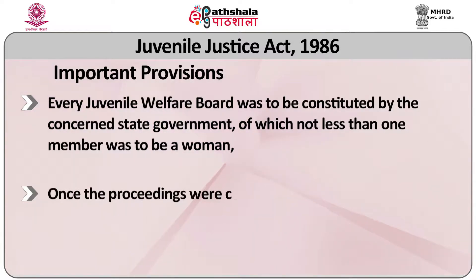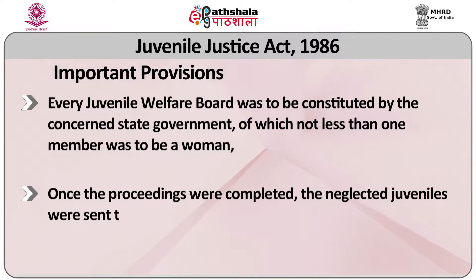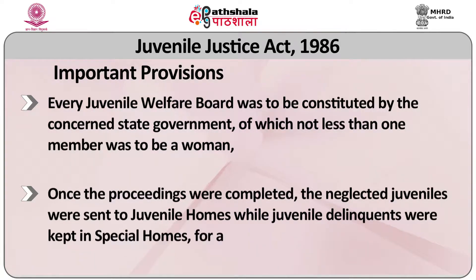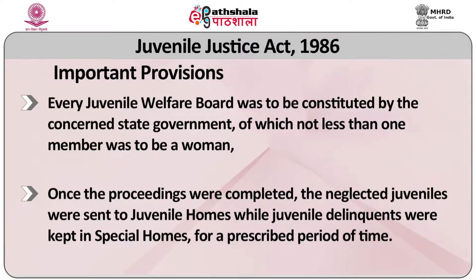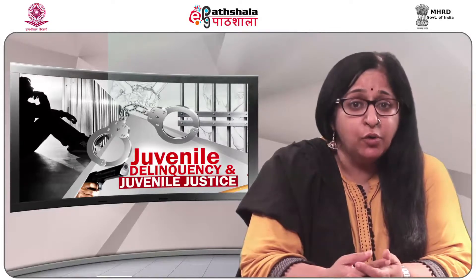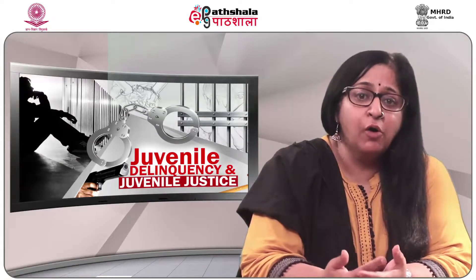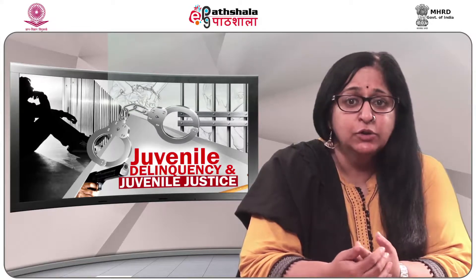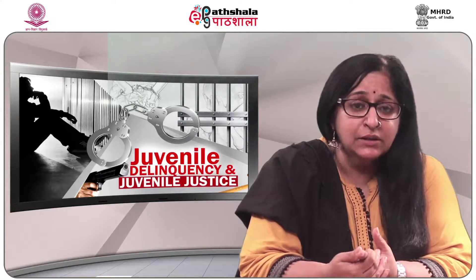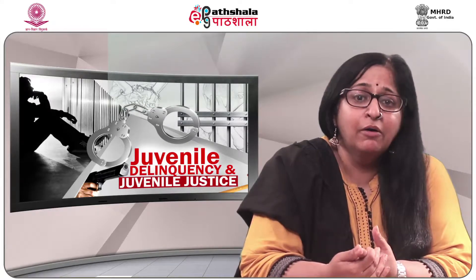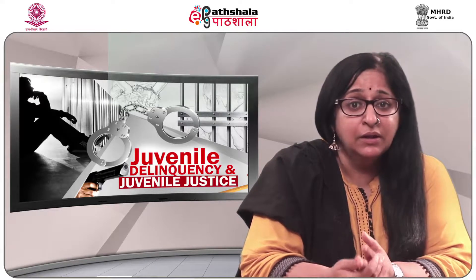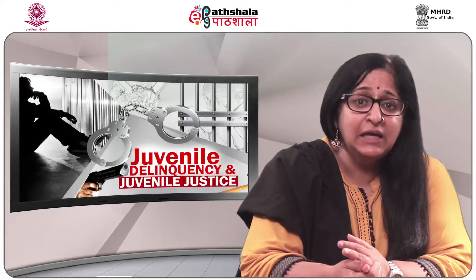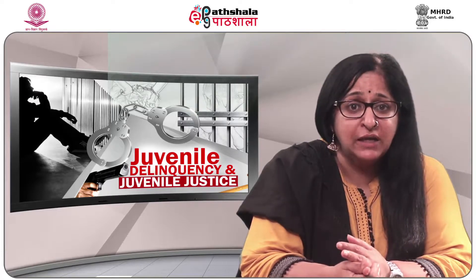Once the proceedings were completed, the neglected juveniles were sent to juvenile homes while the juvenile delinquents were kept in special homes for a prescribed period of time. The juvenile courts could pass the following orders: one, allow the juvenile to return home after advice or admonition; two, release on probation of good conduct to parent, guardian or institution for not more than three years; third, send the juvenile to a special home; four, impose a fine on the juvenile if he or she is above 14 years of age and earning.